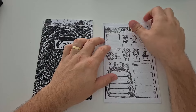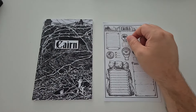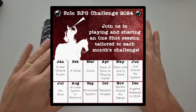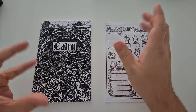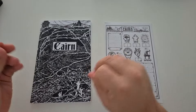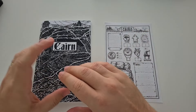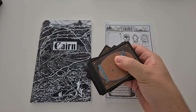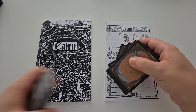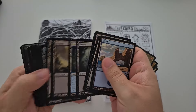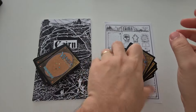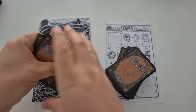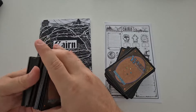Hello! In this video I would like to fulfill the challenge of this month, which is to use random images. I was thinking about what exactly I could use, and from the options I had, I chose magic cards. I have this pile of magic cards — some terrain cards and some random cards — and I would like to use them to bring some inspiration to my session.